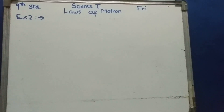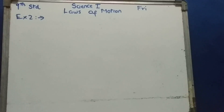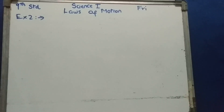Now short example 2. Here, there are two objects in the question. Therefore, we take the mass of the first object as M1 and the mass of the second object as M2.